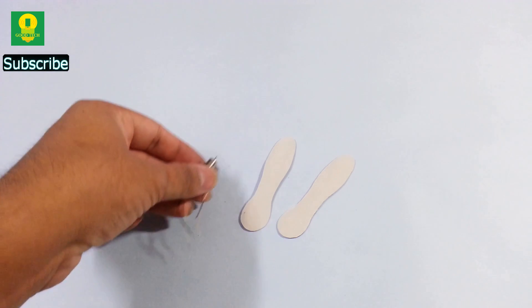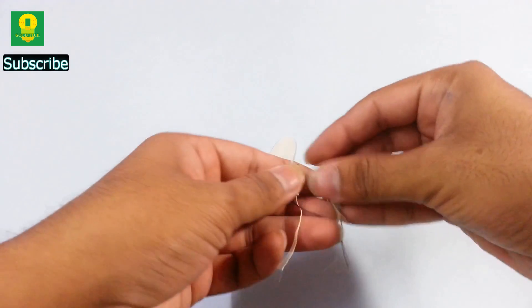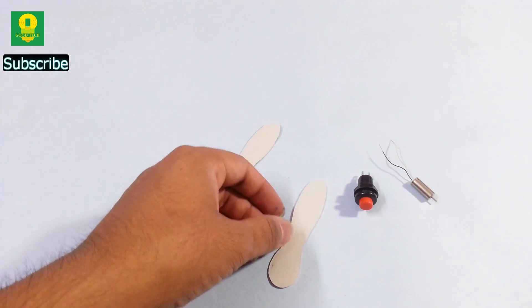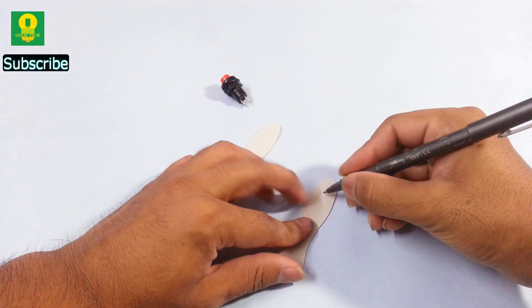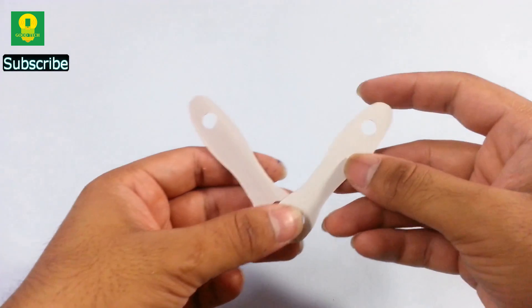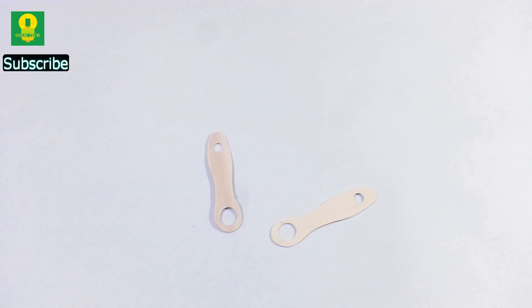Now take two coreless DC motors and a push to on switch. We need to attach the motor and the switch to these plastic pieces. For that, mark two points in the center of both the ends, drill a hole for the motor and drill a bigger hole for the switch. Make two exactly similar pieces.